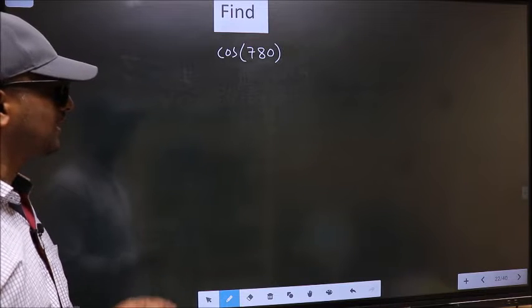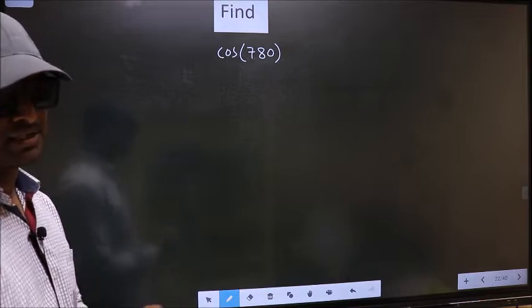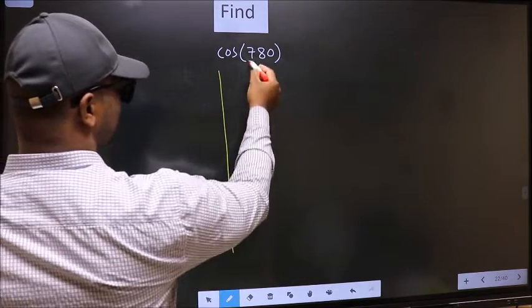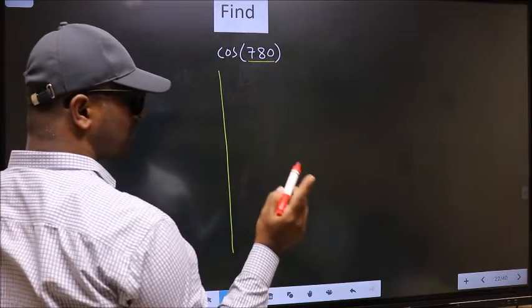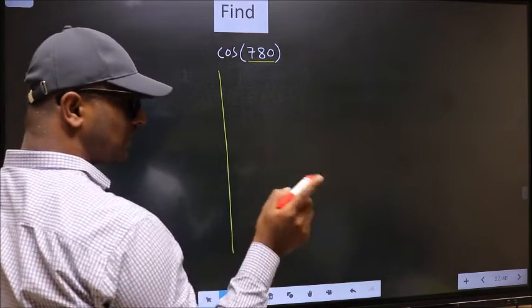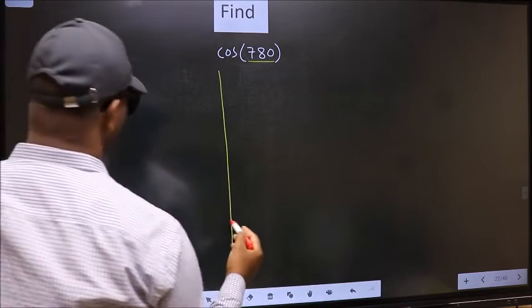Find cos(780°). To find this, we should follow this method. Here we have 780. Now you should check: 780 lies between which two multiples of 180? What I mean is...